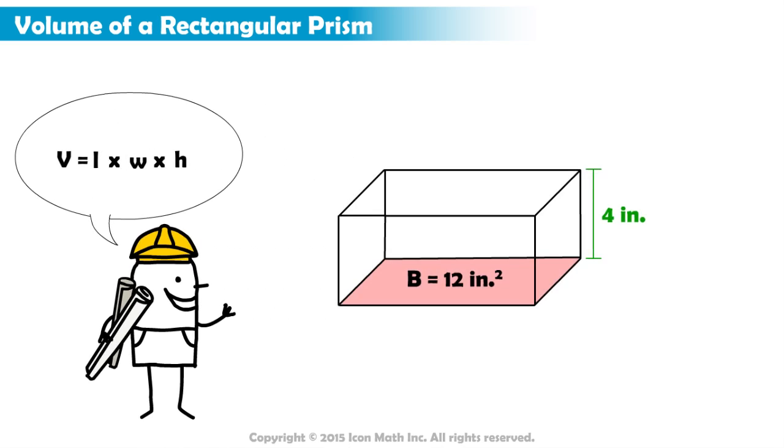Let's look at this rectangular prism. In this rectangular prism, the area of the base is given. Remember, the area of a rectangle is calculated by multiplying the length by the width.